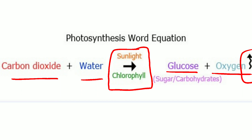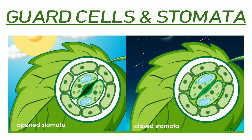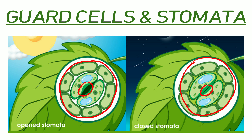How is oxygen gas released from the plant into the atmosphere, and how is carbon dioxide absorbed by the plants? To understand this, let us study about guard cells and stomata. If you take a leaf and enlarge it under a microscope, you can see guard cells. At the center of each guard cell there is a stomata. Stomata are open during the daytime, which allows sunlight and carbon dioxide to enter the leaves. During the night, stomata are closed and oxygen gas is released into the atmosphere through the guard cells.